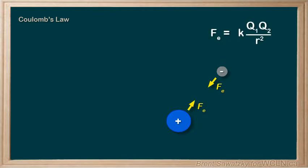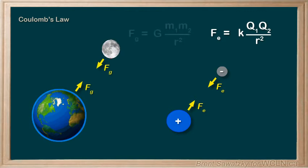F equals k, a new constant, q1, q2, over r squared. And it might look a little complicated off the bat, but a really easy way to get a feel for this equation is to compare it with our familiar Newton's equation for gravitational forces.